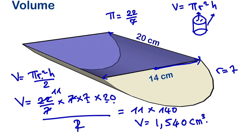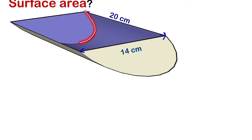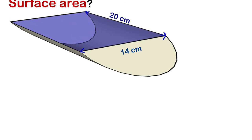Now let's calculate the surface area. Generally, surface area involves the area of all surfaces — the total area. We need to calculate the area of the curved surface plus the two flat ends. Since the top is open, no material is used there, so we do not calculate the surface area of the top. Looking at the two flat ends, one half-circle plus another half-circle gives us one full circle.